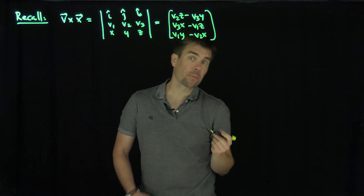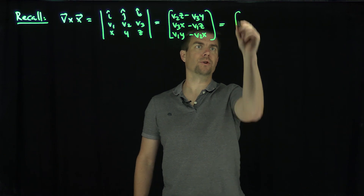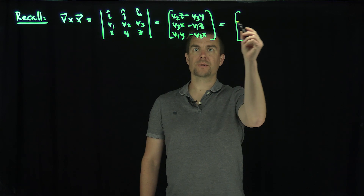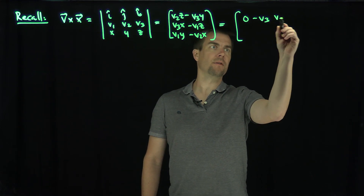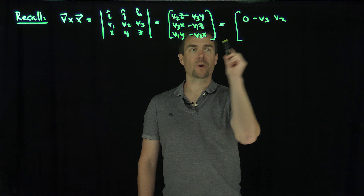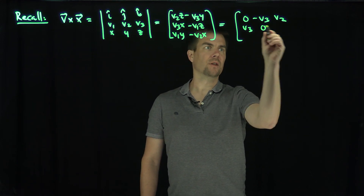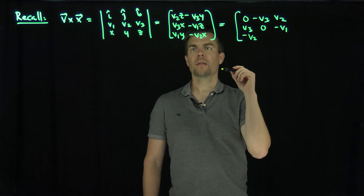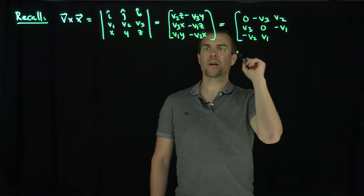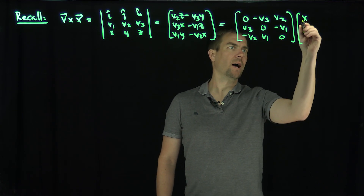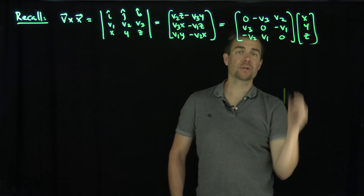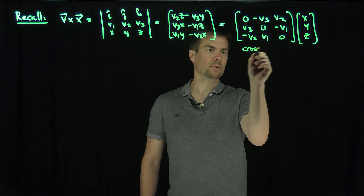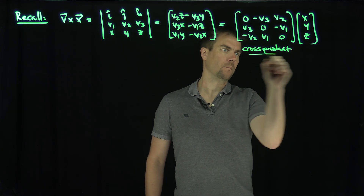And of course this is a linear operator, so I can write this as a matrix equation. The matrix formulation is going to be: 0, negative v3, v2; then v3, 0, negative v1; then negative v2, v1, 0; applied to x, y, z. And so this matrix corresponds to the cross product — this is the cross product matrix.